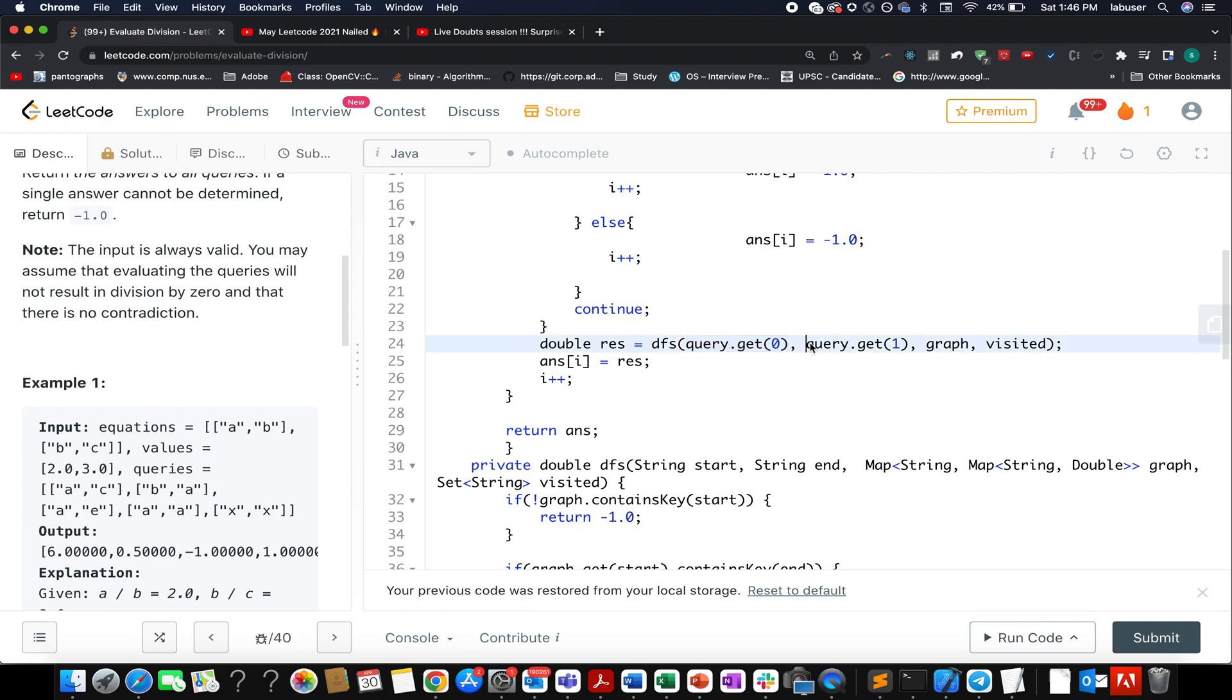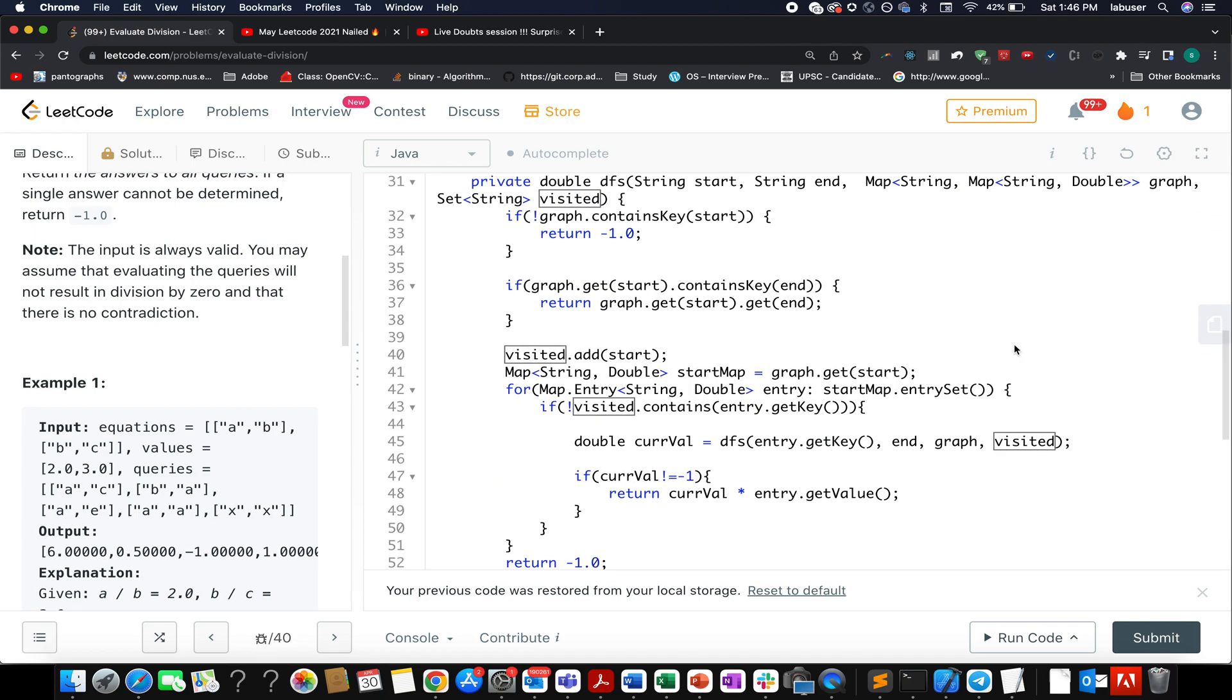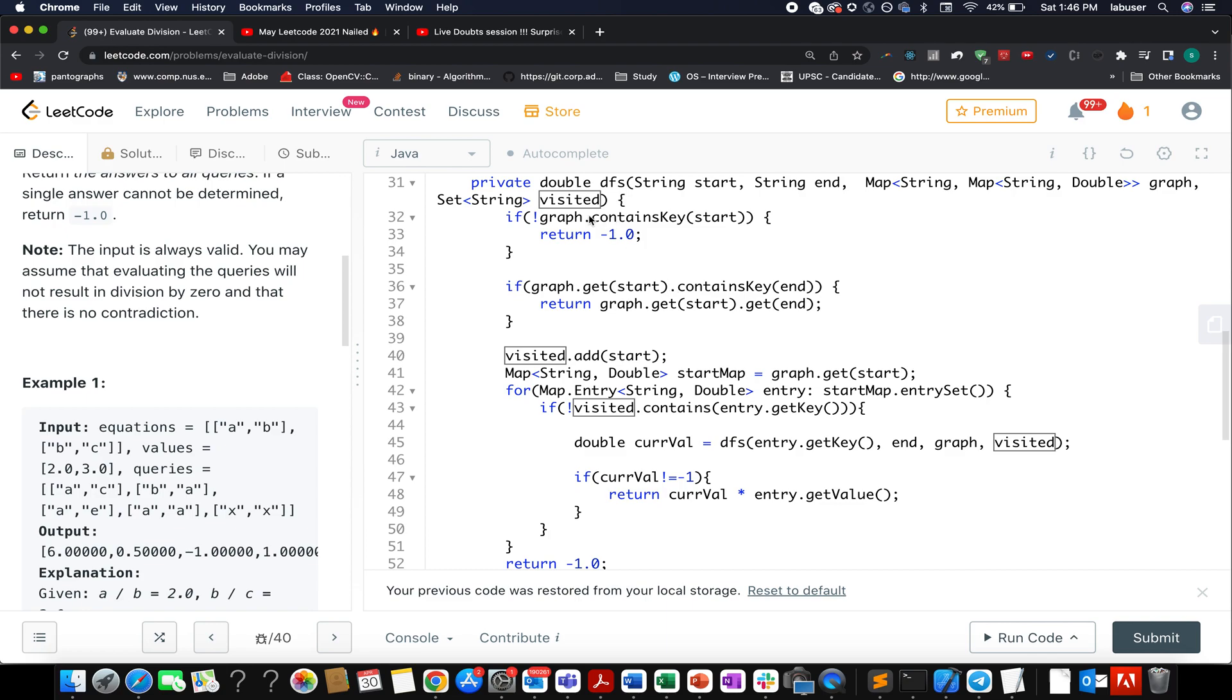The first parameter signifies the source. The second parameter signifies the terminal node, followed by graph and the visited set. If my graph doesn't contain my start, I return -1. If my graph contains start and at that node there's an edge to the end, I return the corresponding value there. I update my start node to the visited set.